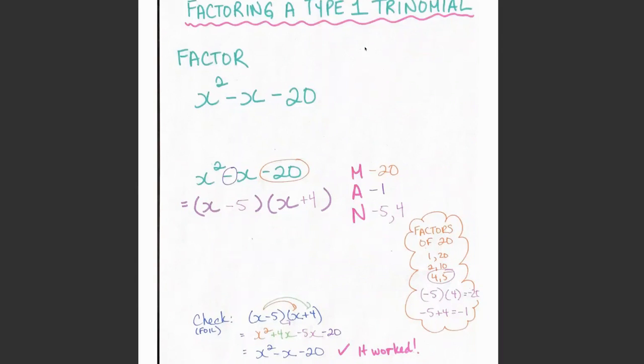What makes it Type 1? We'll talk more about this later, but for now, just know that all Type 1 trinomials have a leading coefficient, or the number in front of the x² term, equal to 1.